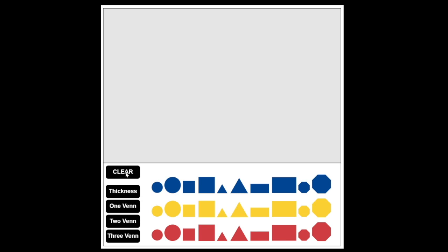Now that we've seen all the functions of this application, let's look at an example of how it can be used. If we wanted to use the two circle Venn diagram, we would click the button for two Venn, and then we can set our labels to certain attributes that we're looking for. Let's set the left label to blue and the right label to thick.